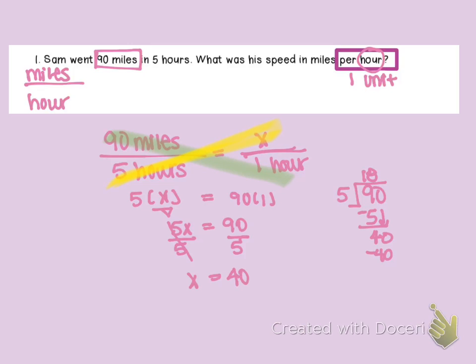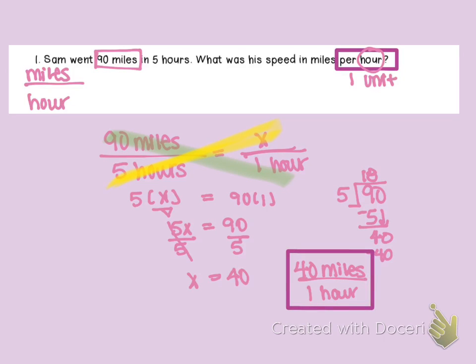Five goes into nine one time, and five goes into 40 eight times, so X equals 18. Wait — 90 divided by 5 is 18. That means 18 miles per one hour. If we are just looking for unit rate, we can set up the fraction, remember that the fraction bar means division, and simply divide 90 by five to get the answer.